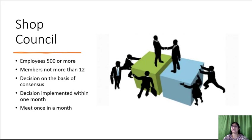Every decision of the shop council shall be implemented by the parties concerned within a period of one month. The council shall meet at least once in a month. The shop council must take efforts to increase productivity, to avoid wastages, to make maximum use of machines and manpower, and to recommend steps to remove absenteeism.